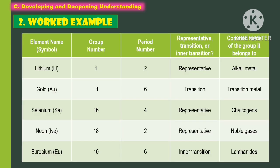For the worked example, the following are the element name, group number, period name, representative, transition, or inner transition, and the combined name of the group it belongs to. The first element is lithium. It has a group number of 1 and the period is 2. It is representative, and belongs to the alkali metals.